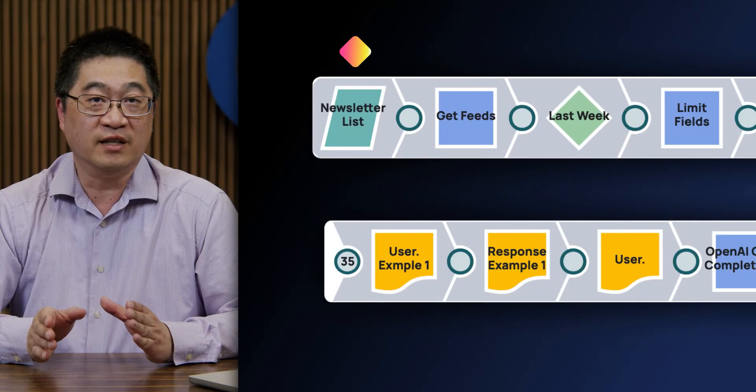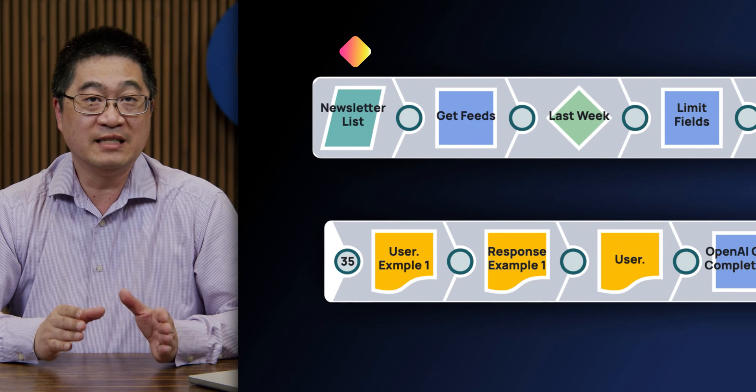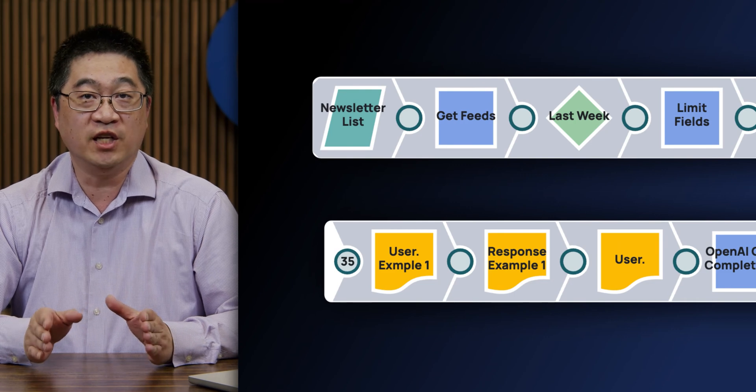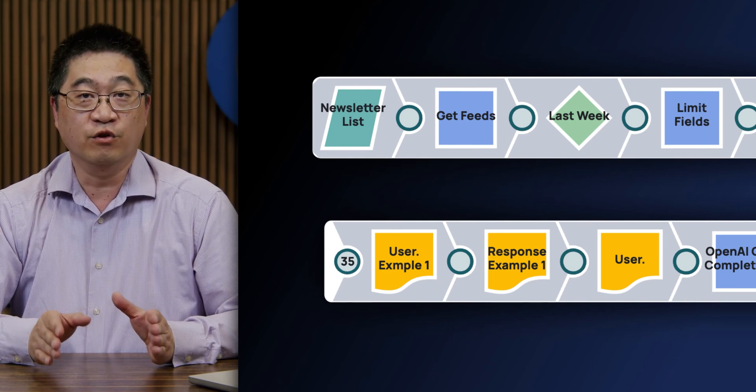With a few simple adjustments, the agent can create summaries for use in daily news articles, or be refined further into weekly newsletters to customers. Let's take a look at the inner workings of the agent. Newsletter Lists accesses a Google Sheet with the list of newsfeeds we want to monitor.